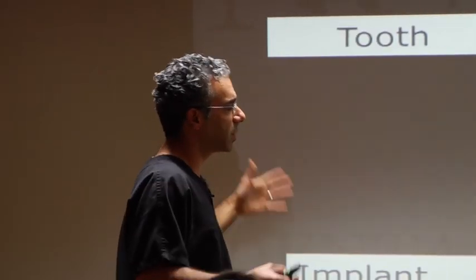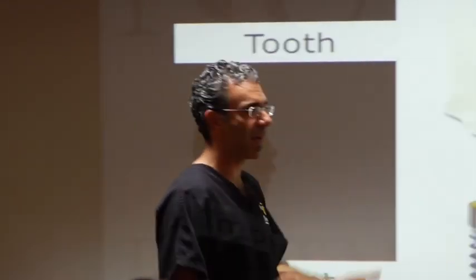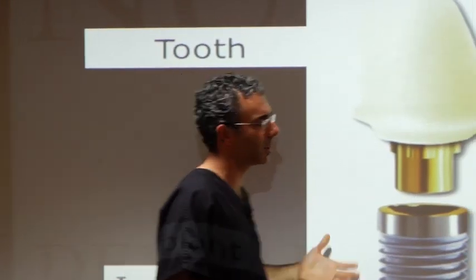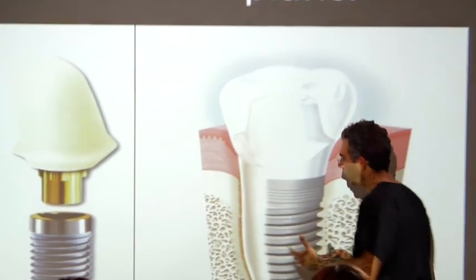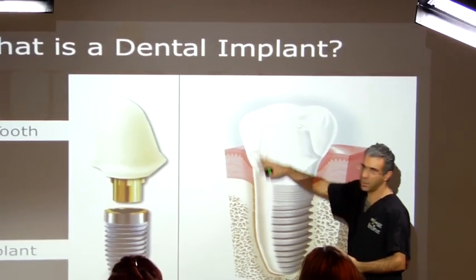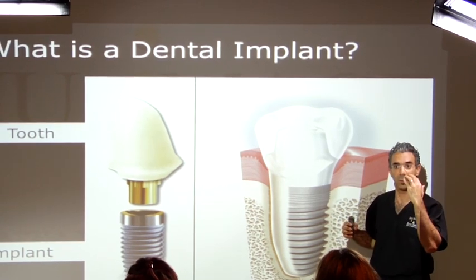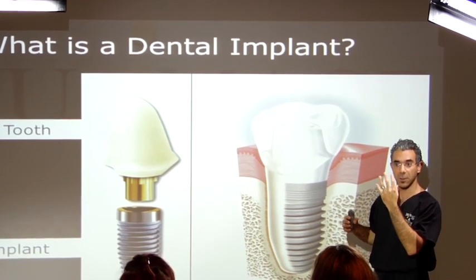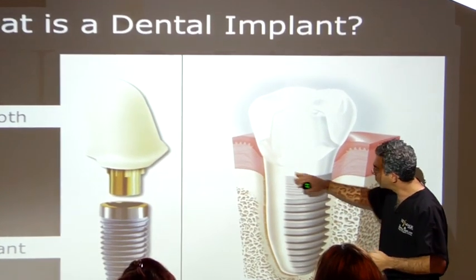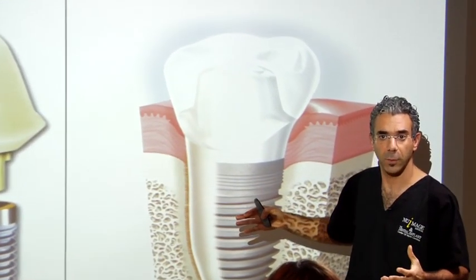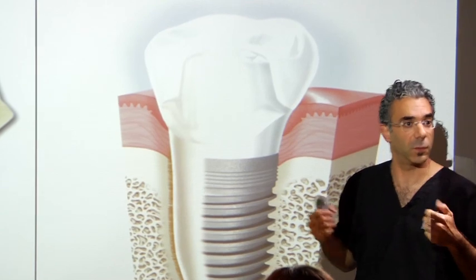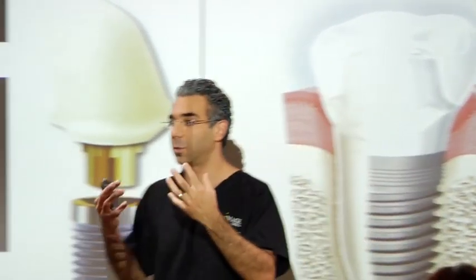We're going to talk about what a dental implant is. The best way to explain it is to look at a tooth: a tooth is made up of the part you see in the mouth, which we call the crown — that white part you see when you smile. The part you don't see is the base, called the root of a tooth, which is the foundation that anchors the tooth in the jaw.